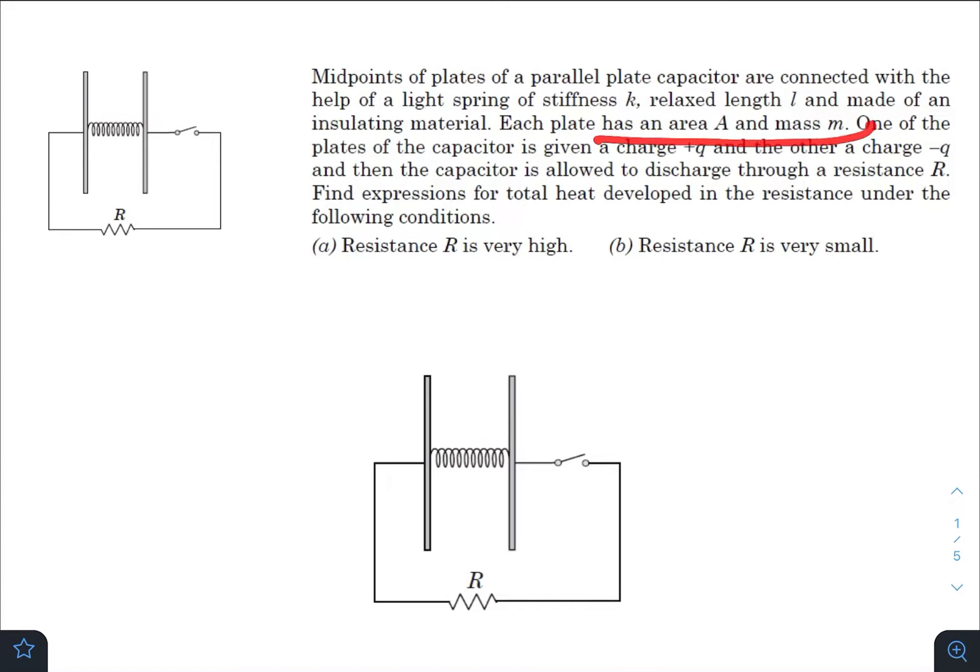Each plate has an area A and mass M. One of the plates of the capacitor is given a charge +Q and the other a charge -Q, and then the capacitor is allowed to discharge through a resistance R. Find expressions for total heat developed in the resistance under the following conditions: (a) Resistance R is very high, and (b) Resistance R is very small.